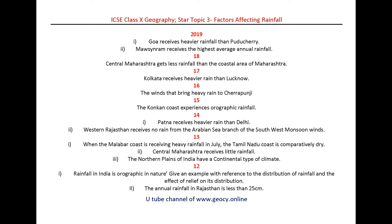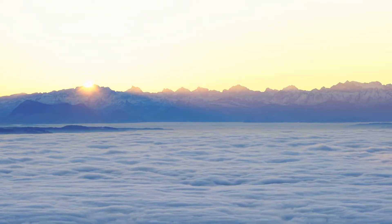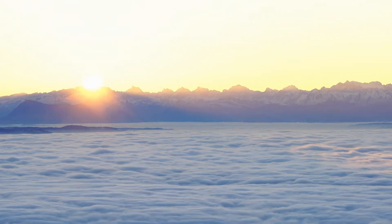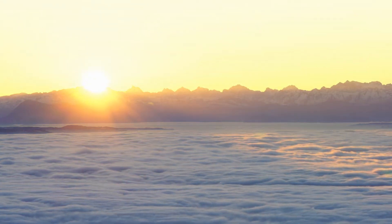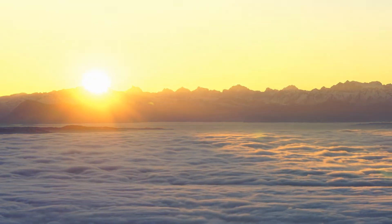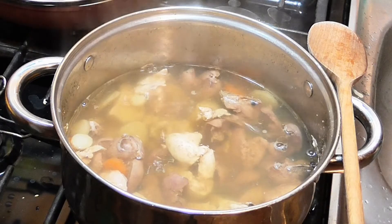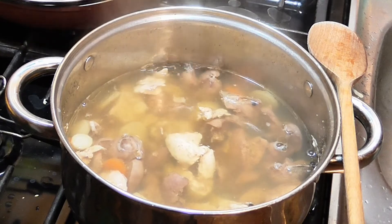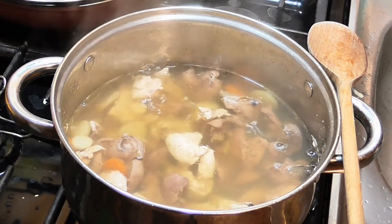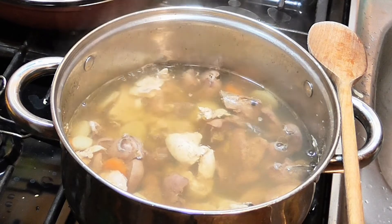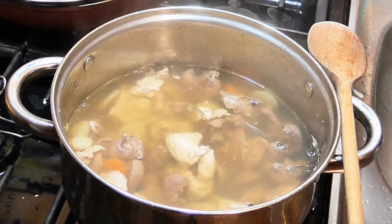Let us see the factors that affect the rainfall. You may find sub-factors for all these steps. The first factor that influences the amount of rainfall is evaporation from the oceans and seas, because oceans are the suppliers of water for rain. As India is located in the tropical zone, evaporation is always happening from the oceans and seas. Evaporation is mainly influenced by the percentage of humidity in the air and the temperature of the water.